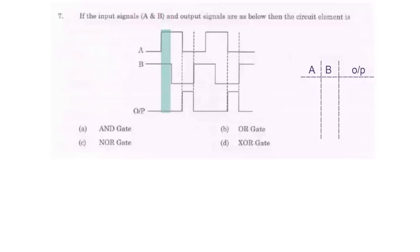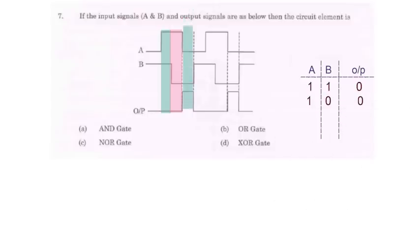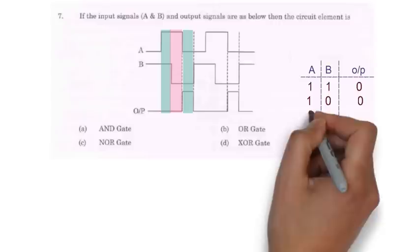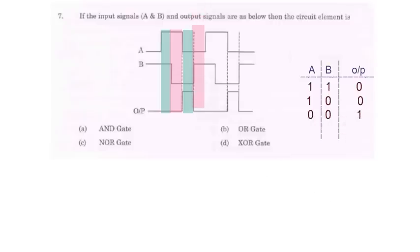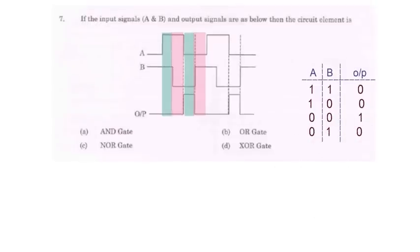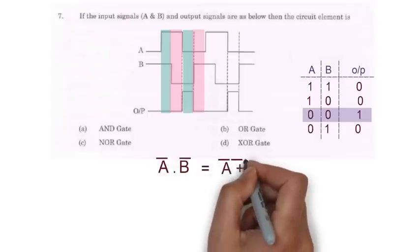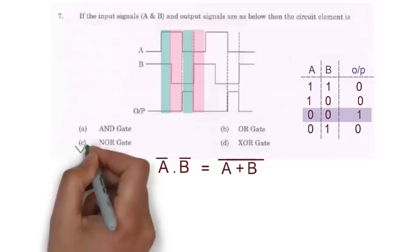So at first make a truth table and put the values in that according to the waveform. So in first case here for a equal to 1 and b equal to 1 output equal to 0. In second case for a equal to 1 and b equal to 0 output here is 0. And in next case for a equal to 0 and b equal to 0 output is 1. And at last for a equal to 0 and b equal to 1 output is 0. So in the truth table only one entry a equal to 0 and b equal to 0 has output as 1 so circuit element will be a bar into b bar that will be equal to a plus b whole bar which is a nor gate. So option C will be correct option.